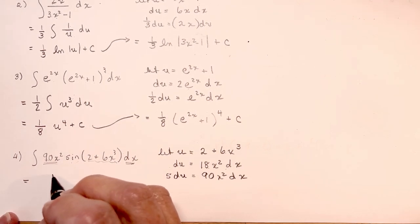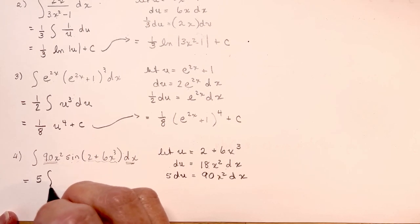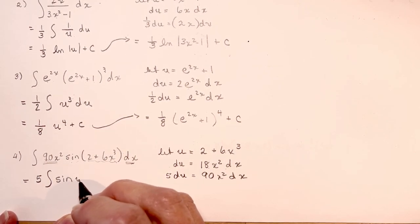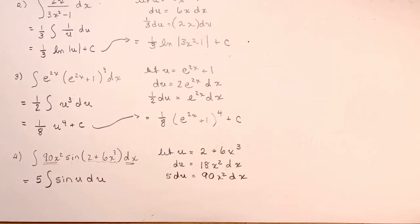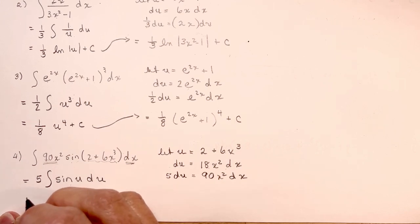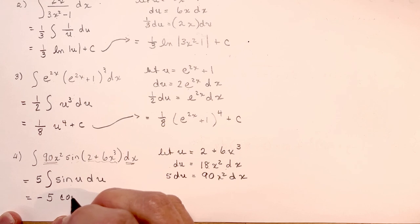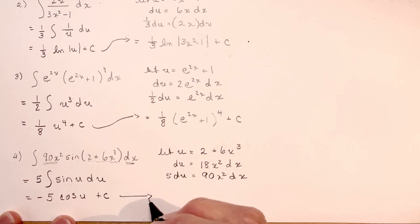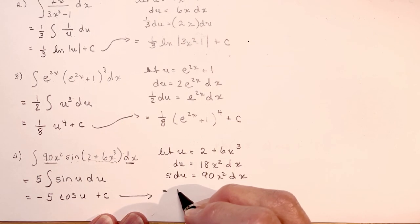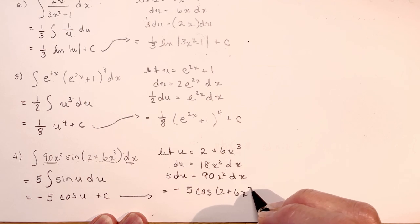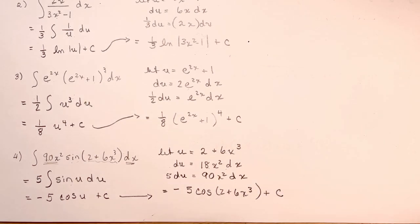So the integral becomes 5 — that's my constant — times the integral of sine u du. Now what's the integral of sine u? The integral of sine is negative cos. So that's going to give me negative 5 cos u plus c. Bringing that over: minus 5 cos of the quantity 2 plus 6x cubed, plus c. Ta-da!